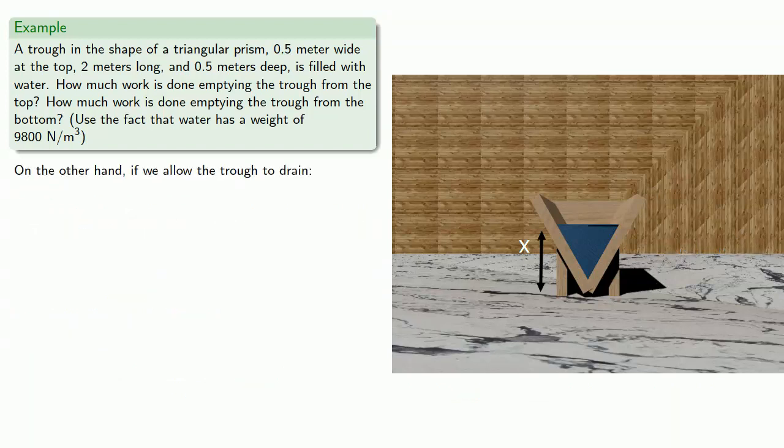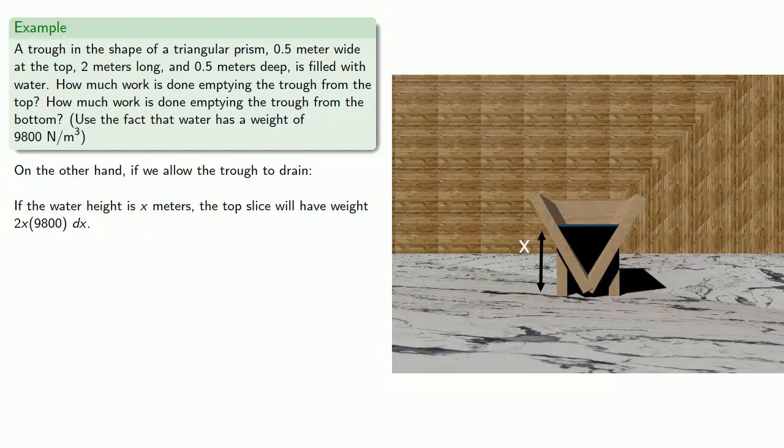On the other hand, if we allow the trough to drain, if the water height is x meters, the top slice will still have a weight of 2x times 9,800 dx. This time it will be moved x meters—in this case, x meters straight down.